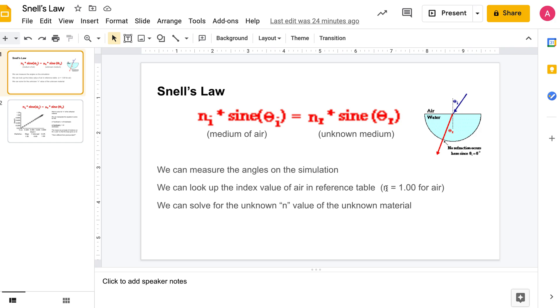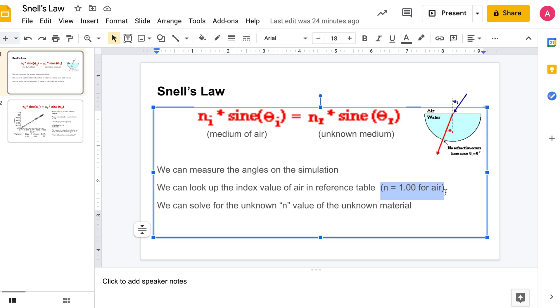We can look up the index value of air in our reference table. Just to let you know that happens to be 1 for air, so this number here in our simulation is going to be 1, and 1 times anything is just itself.